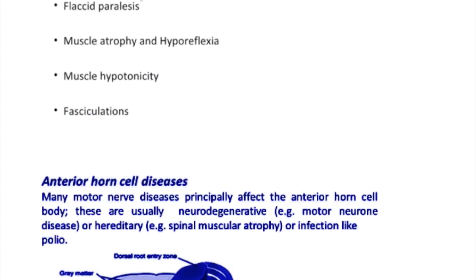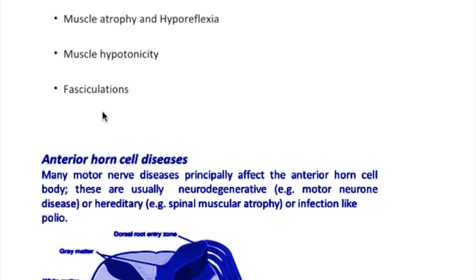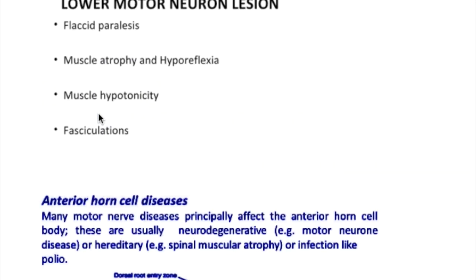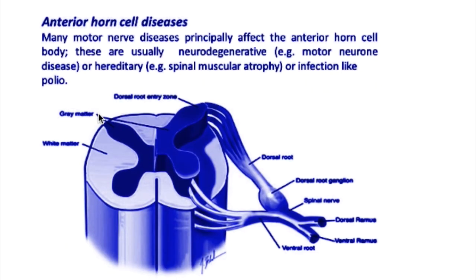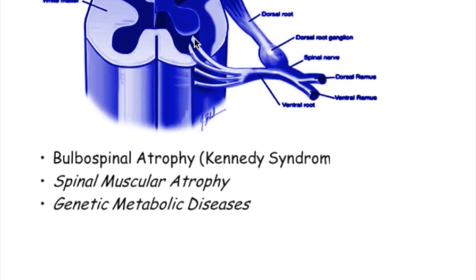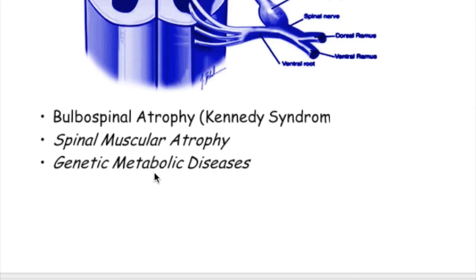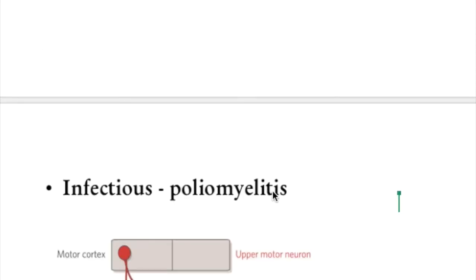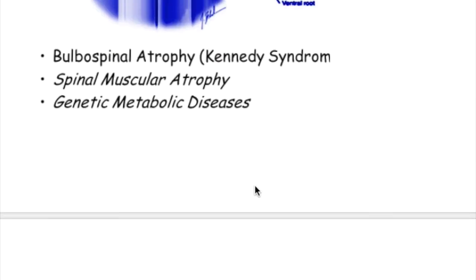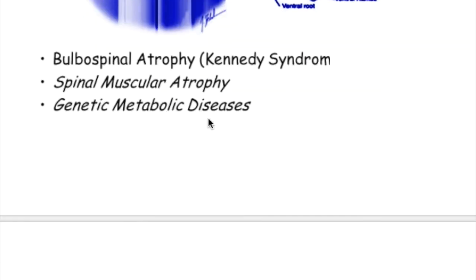Features of lower motor neuron lesions include flaccid paralysis, muscle atrophy, hypotonia, hyporeflexia, fasciculations, and fibrillations. The lower motor neuron affects the anterior horn cell of the spinal cord. Other diseases affecting the anterior horn cell include bulbospinal atrophy (Kennedy syndrome), spinal muscular atrophy, genetic metabolic diseases, and poliomyelitis — all of which can cause lower motor neuron type lesions.